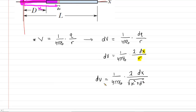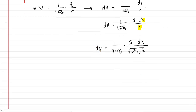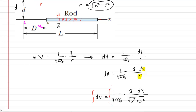That expression represents the electric potential contributed by a single charge element. We need the electric potential contributed by all charge elements along the rod, so we must add them all up — which requires calculus. To add up an infinite number of little items, we integrate both sides of the equation. We need limits of integration: the lower limit is the leftmost end of the rod, symbolized by capital D, and the upper limit is the rightmost end, symbolized by capital L. So we integrate from D to L.